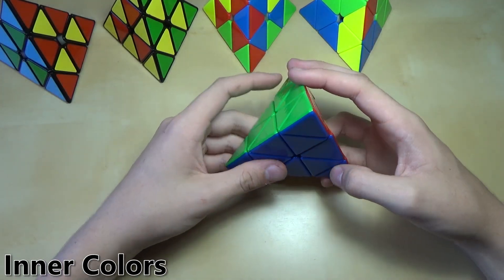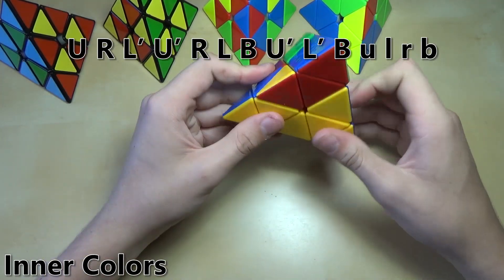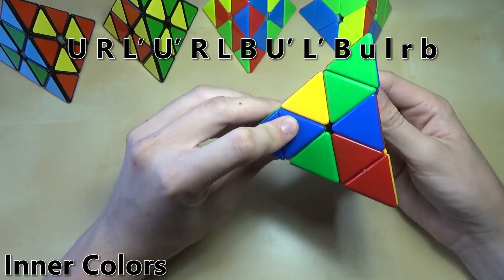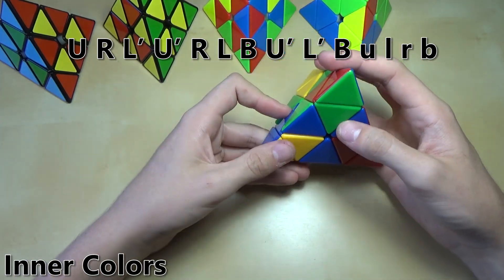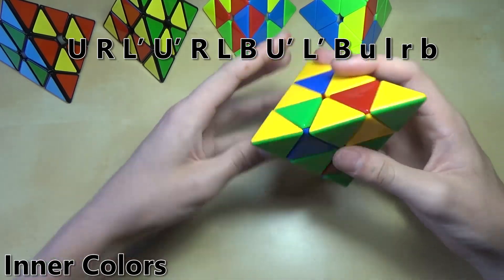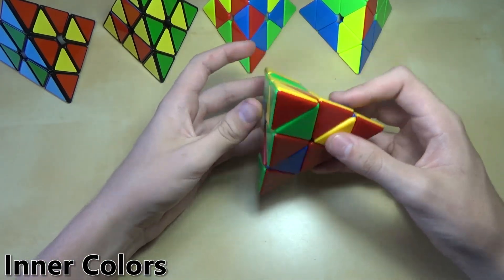What you do for this one is U R L prime U prime R L B U prime L prime B. And then you turn all the tips. So U L R B just like that. And now you have the pattern.